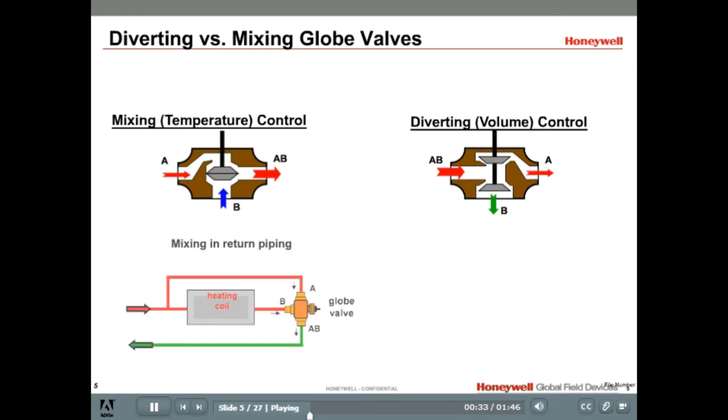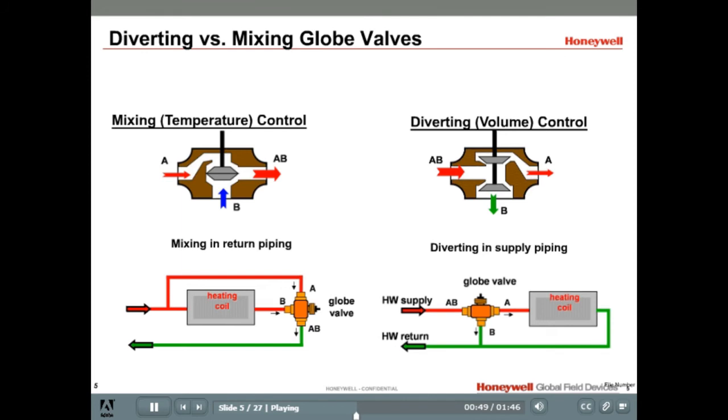Mixing valves are considered as temperature control devices. They mix inlets A and B into a common outlet, AB. In this coil bypass application, the hot water supply travels either through the coil or around the coil. Diverting valves have one inlet port, AB, and divert to two separate outlet ports, A or B. The valve stroke determines which. They are considered as volume control devices in this coil application. In this coil bypass diagram, the hot water supply is diverted either through the heating coil or back to the hot water source, such as the boiler.